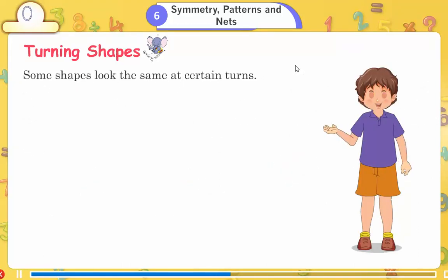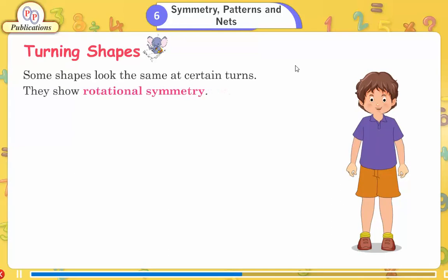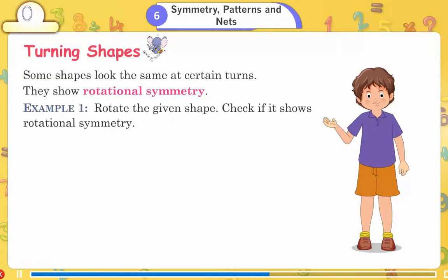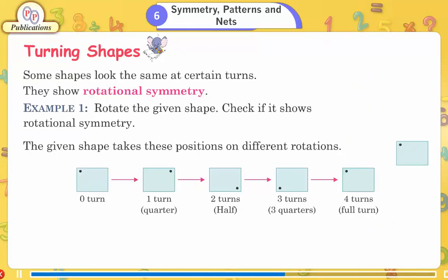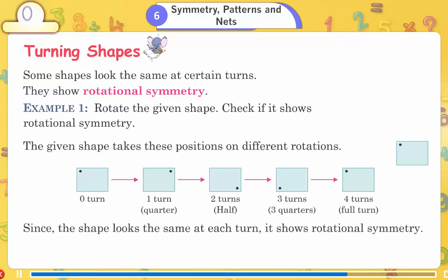Some shapes look the same at certain turns. They show rotational symmetry. Example 1: Rotate the given shape. Check if it shows rotational symmetry. The given shape takes 3 positions on different rotations: 0 turn, 1 turn quarter, 2 turns half, 3 turns three quarters, 4 turns full turn. Since the shape looks the same at each turn, it shows rotational symmetry.